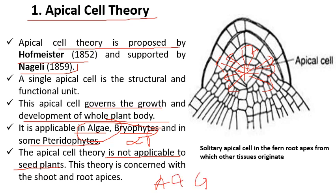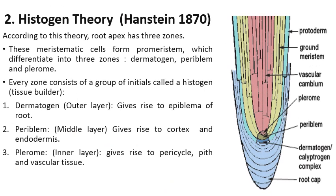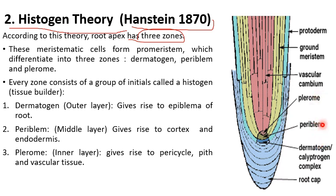The second theory of root apical meristem is the histogen theory, proposed by Hansen in the year 1870. According to this theory, the root apical meristem has three zones: the outermost layer called dermatogen, the middle layer called periblem, and the innermost layer called pleurome. Keep in mind that they are all meristematic. Every zone is a group of initials — meristematic cells of the plant — and they are called histogen. So dermatogen, periblem, and pleurome are all meristematic, and these groups are called histogen.